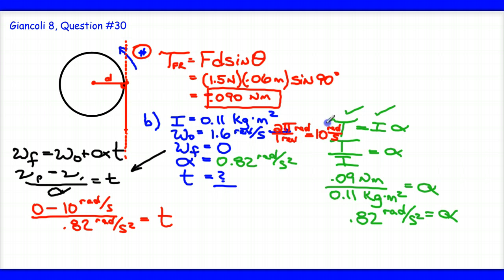It's slowing down. So the angular acceleration is negative. That gives me a negative in the denominator. And that helps me to deal with my negative in the numerator. I get negative 10 over negative 0.82 radians per second squared. And I end up getting about 12 seconds.